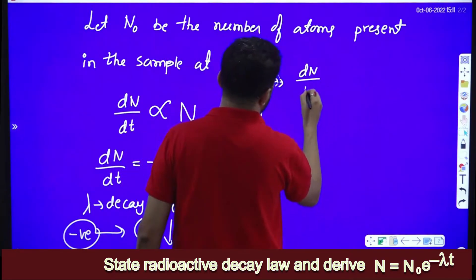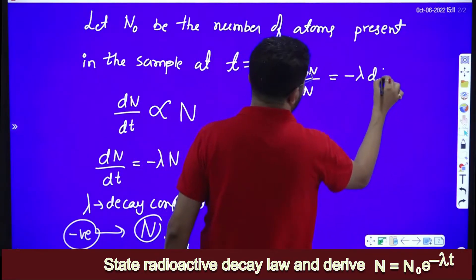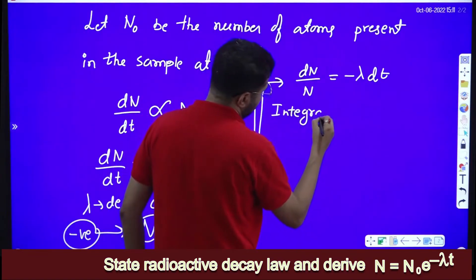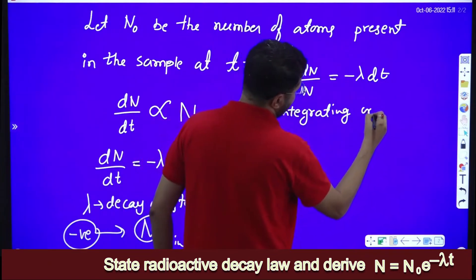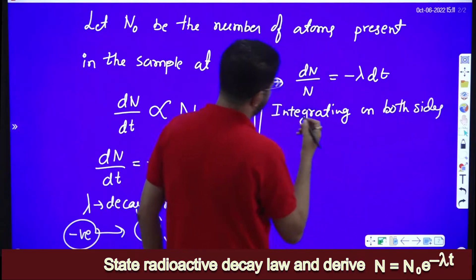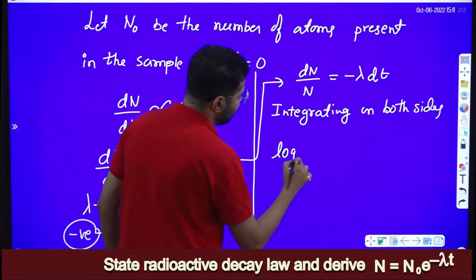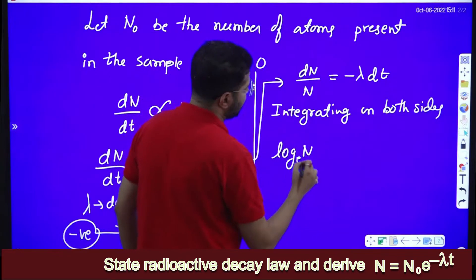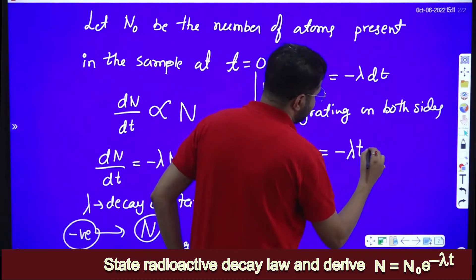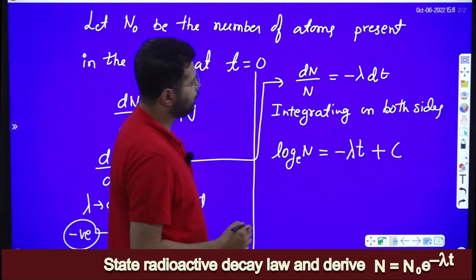We rearrange this equation: dN/N is equal to minus lambda into dt. Now we will integrate this equation on both sides. Integration of 1/N with respect to N is log N to the base e, which is equal to minus lambda t plus C.